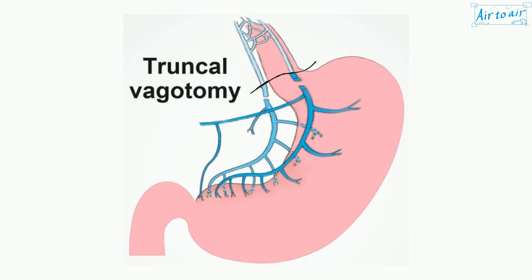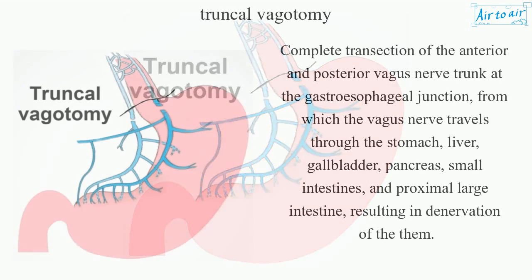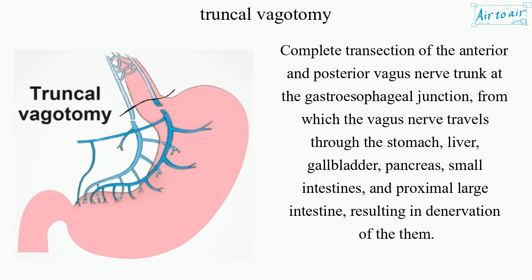Truncal Vagotomy: complete transection of the anterior and posterior vagus nerve trunk at the gastroesophageal junction, from which the vagus nerve travels through the stomach, liver, gallbladder, pancreas, small intestines, and proximal large intestine.